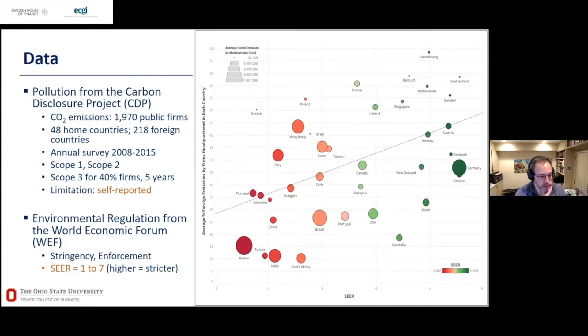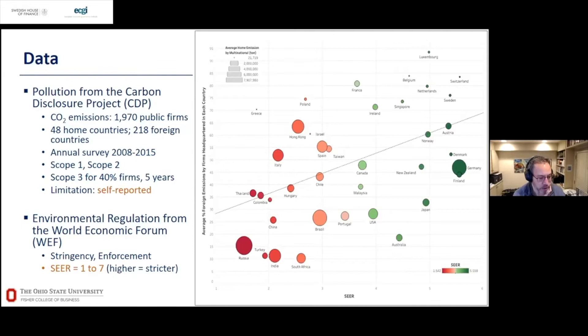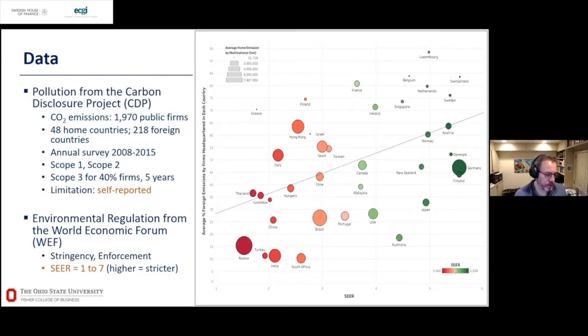On the left of the chart are low-SEAR countries — Russia, India, Turkey, China, Colombia, Thailand — where firms headquartered there emit more CO2 at home than abroad. As you move right to higher-SEAR OECD countries — Japan, New Zealand, Finland, Germany, the US — firms emit more abroad. This is just summary statistics; our regressions control for GDP and other variables, but the relationship is preserved in the regressions.